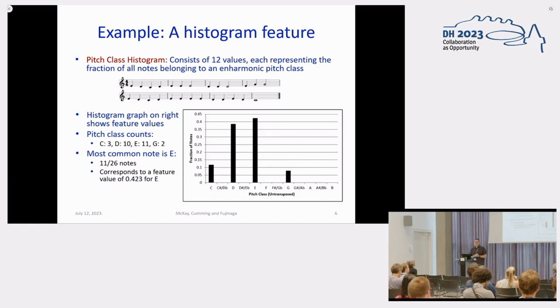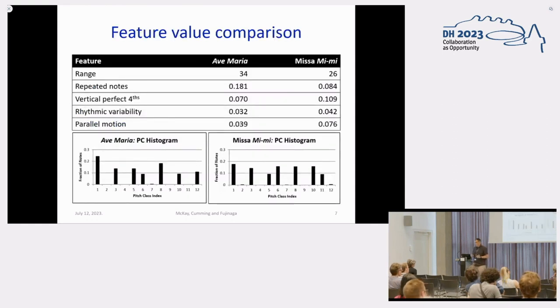As an example of multi-dimensional features, you can take the pitch class histogram. This is a histogram of 12 bins. Each bin corresponds to a different enharmonic pitch class. The value of the bin represents the frequency, or the relative frequency, of each of the pitch classes. There's four pitch classes in this particular melody. That's why all the other bins are zero, and you can see how common certain pitch classes are to one another. Once you've done this, you could extract a bunch of features and compare two pieces. In this case, these are two famous pieces by Josquin and Oppenheim, two Renaissance composers. You can perform these sort of manual analyses. That can be useful.